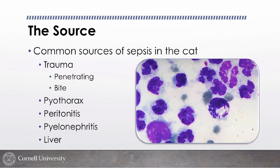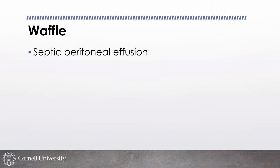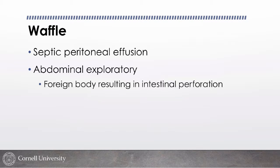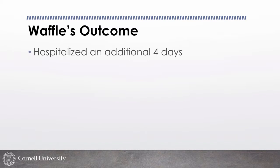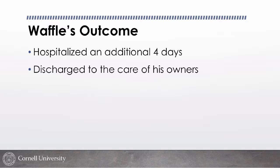Common sources of sepsis in cats: penetrating wounds, especially bite wounds hidden under fur that you have to clip to find — hopefully painful enough to guide you where to start clipping; pyothorax; peritonitis; pyonephritis; liver disease. With Waffle, we found peritoneal effusion, tapped it, and confirmed septic peritoneal effusion — a septic abdomen. Owners were on board for surgery. Abdominal exploratory found a foreign body causing intestinal perforation — a soft foam earplug. He got intestinal resection and anastomosis and did okay.